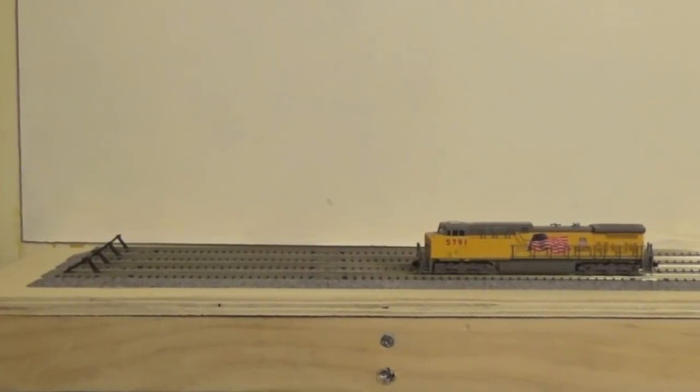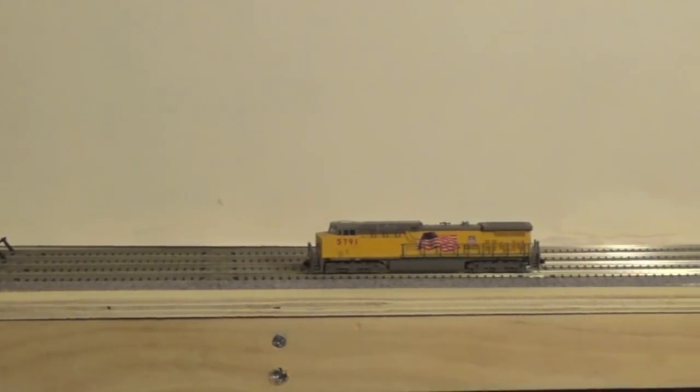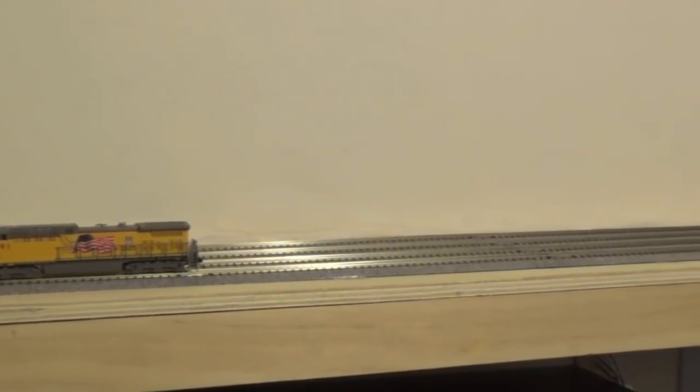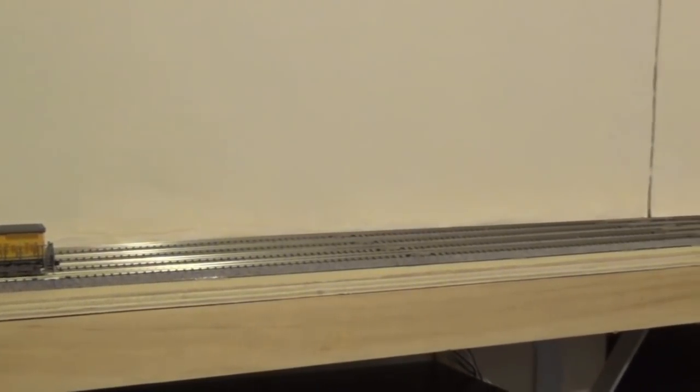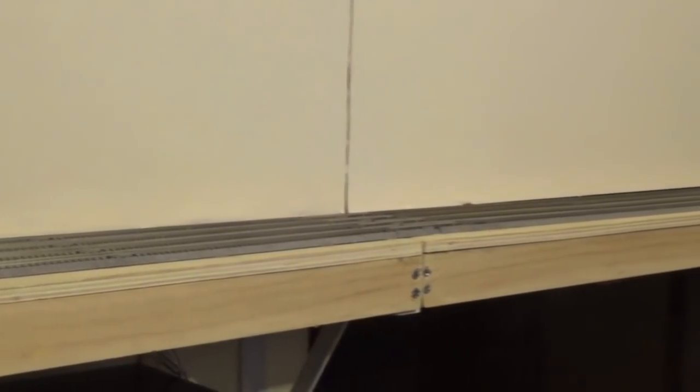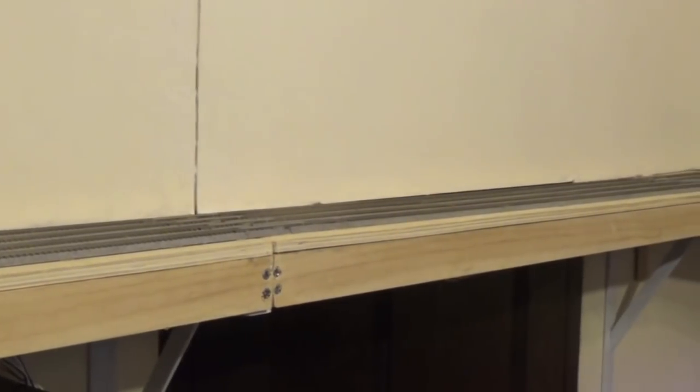All right here's the Pocatello staging yard as it currently exists on my layout. I've completed the track work and most of the wiring and I will show you how I did it. The yard is 8 inches wide and 9 feet long and contains four staging tracks.